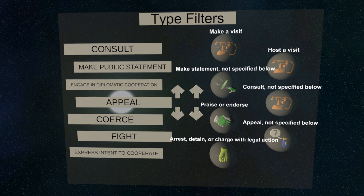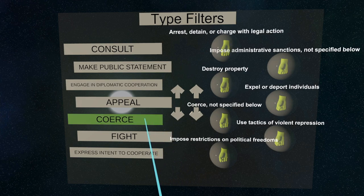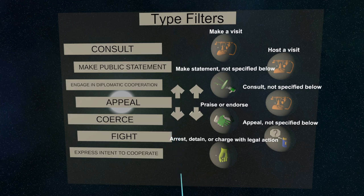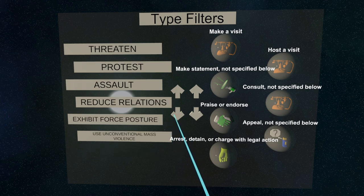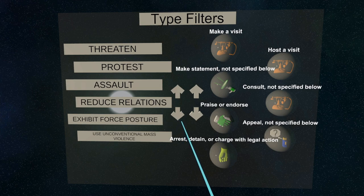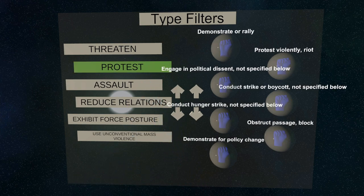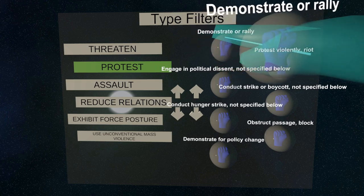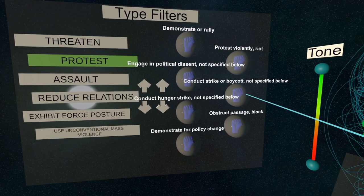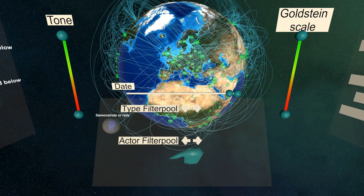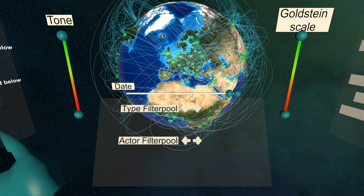By pointing at the buttons on the left and pressing the A button, the list can be grouped by 20 categories. Pressing A while pointing at the arrows allows you to scroll through the lists. For example, to only look at demonstrations or protests, you'll want to grab the corresponding event type and drop it in the list of applied filters. Filters are taken back out of this list to be removed as search parameters.